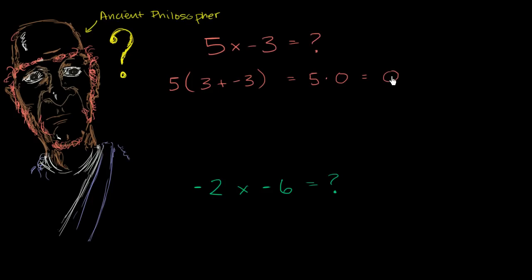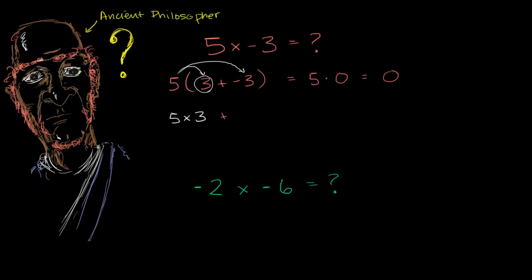But on the other hand, you want multiplying positive and negative numbers to be consistent with the distributive property, so you should be able to distribute this 5. And for math to be consistent — and math should be consistent — you should get the exact same answer. So distributing the 5, you get 5 times 3, plus 5 times negative 3.